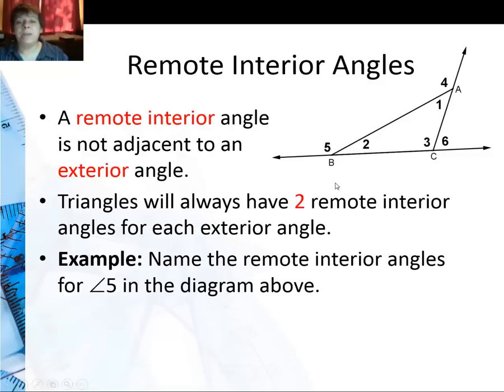So triangles will always have two remote interior angles for any exterior angle. In this example I'm going to name the remote interior angles for angle five. I'm not going to use angle two because that's adjacent, it's touching angle five. But I can use angle one and angle three. Those are the remote interior angles for angle five.